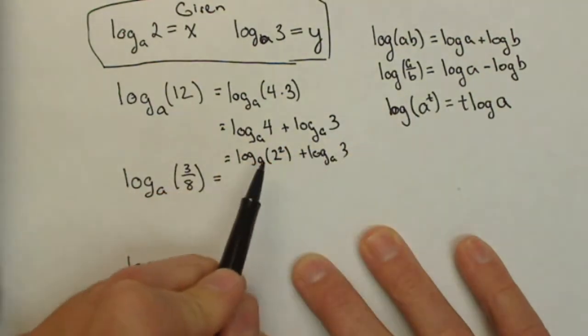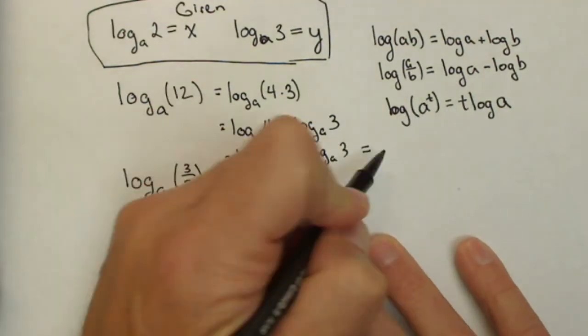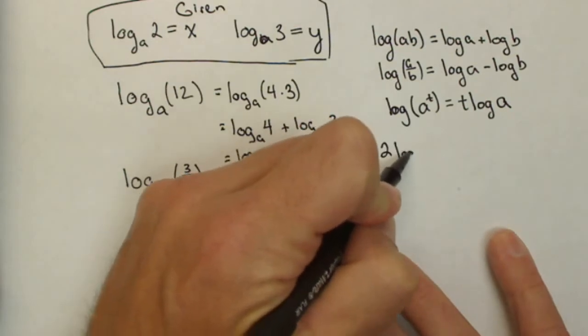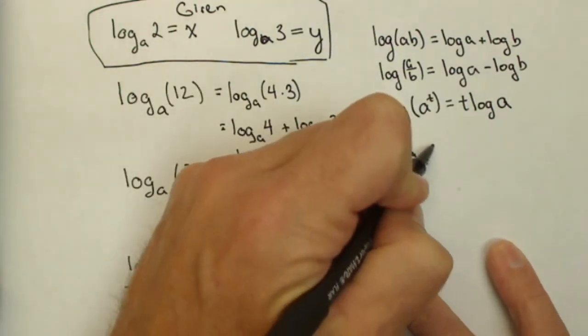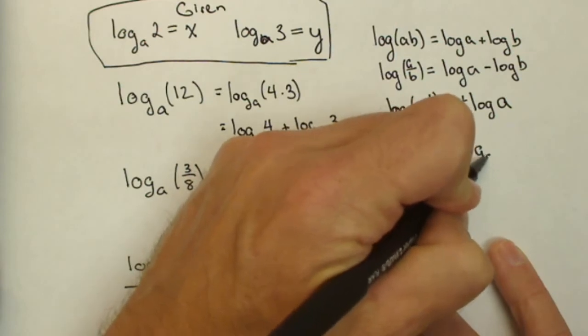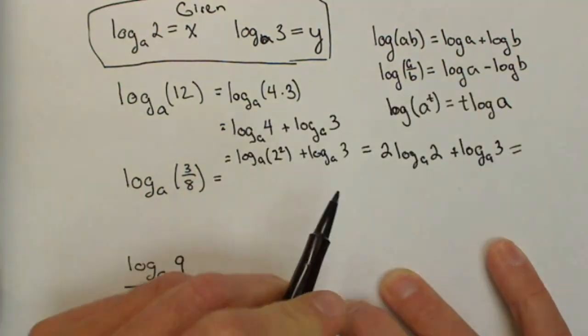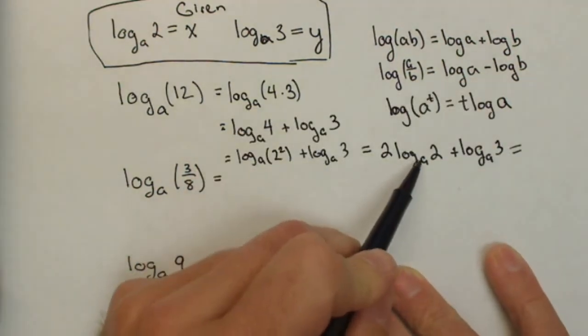We have a property that says we can pull the exponent out front. So this is 2 log base a of 2 plus log base a of 3.